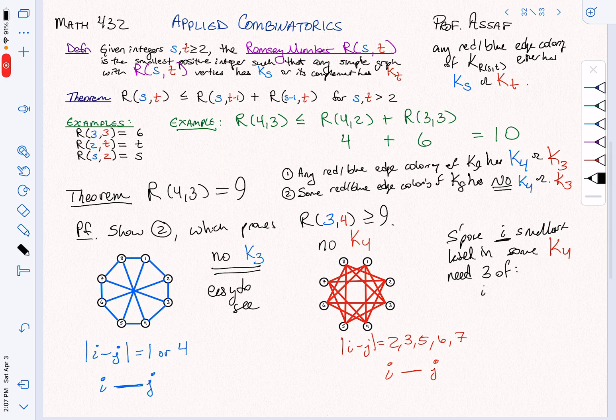So we need 3 of the guys to whom it connects. Who is i connected to? i is connected to, if it's the smallest, it's connected to i+2. It's connected to i+3. It's not connected to i+1, because that would be the i+1 here. So it's not connected here.